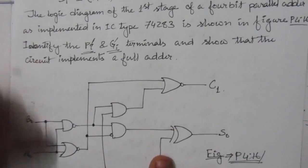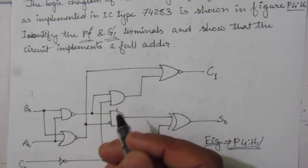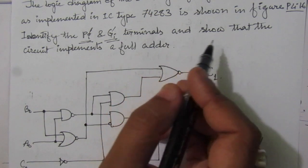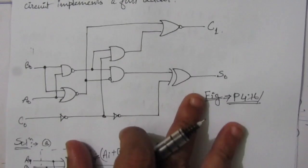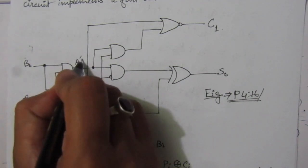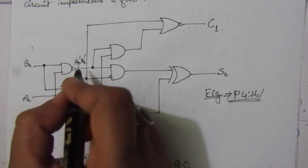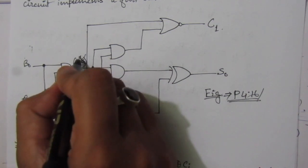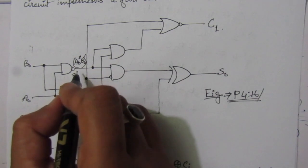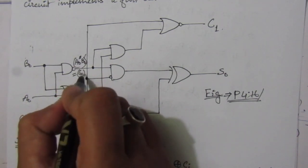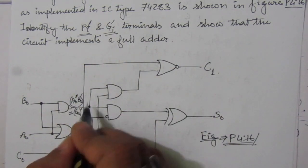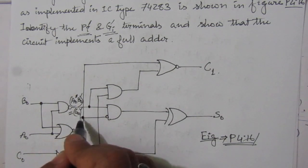In the second part, we are given a logic circuit and have to identify the P_i dash and G_i dash terminals so the circuit implements a full adder. From the circuit, at the output of the NAND gate we get A_0·B_0 whole bar. Since A_0·B_0 is G_0, this output is G_0 bar. So we have found the terminal where G_i dash, here G_0 dash, is obtained.